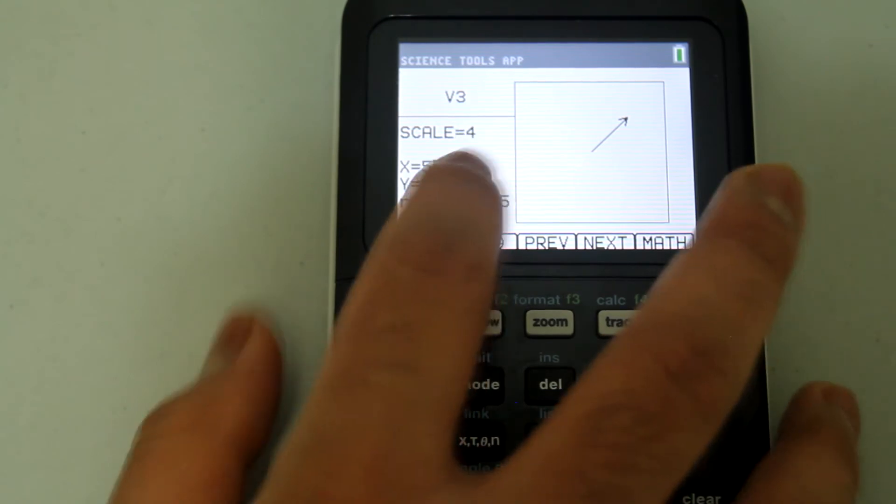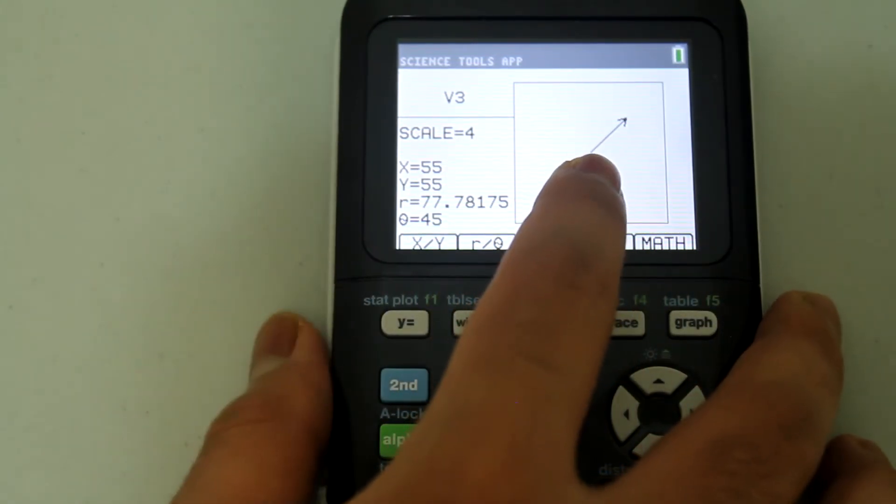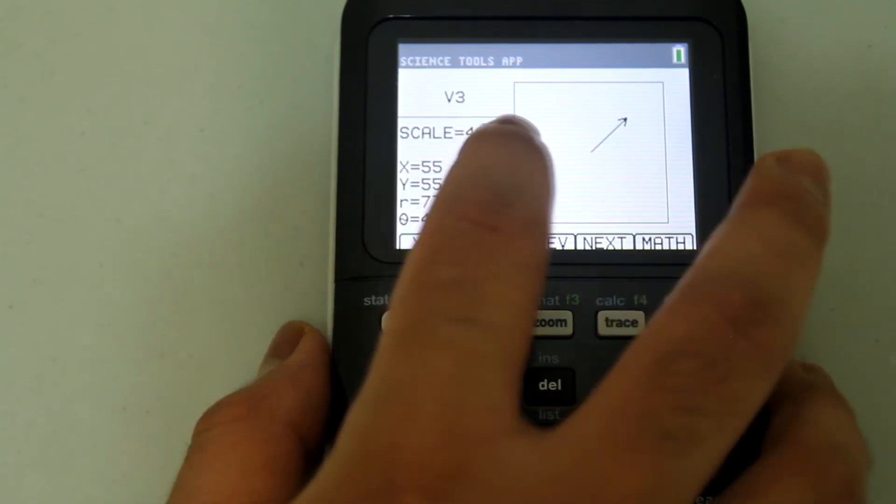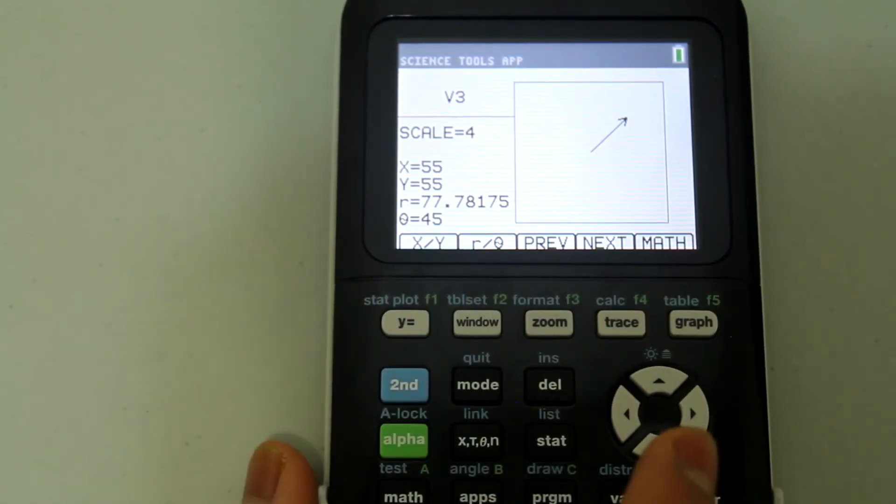The scale basically is there so it can fit the vector on the window and it lets you know what scale it's using. That's the purpose of the scale.